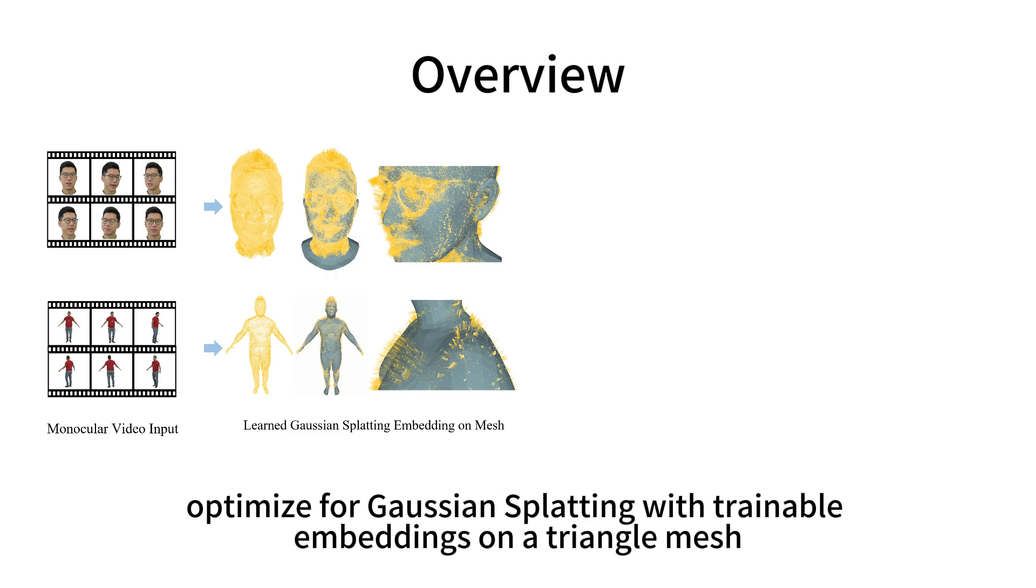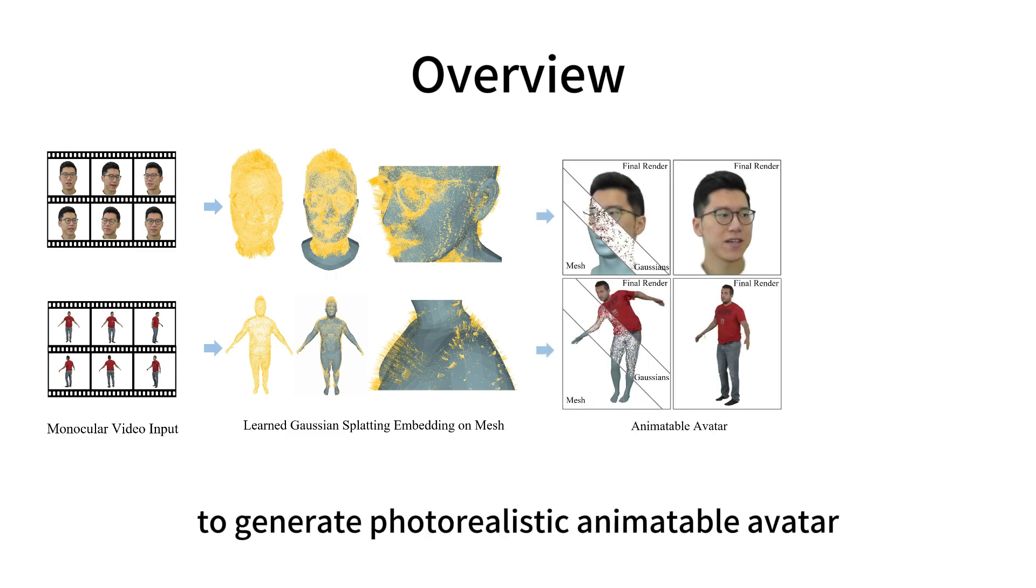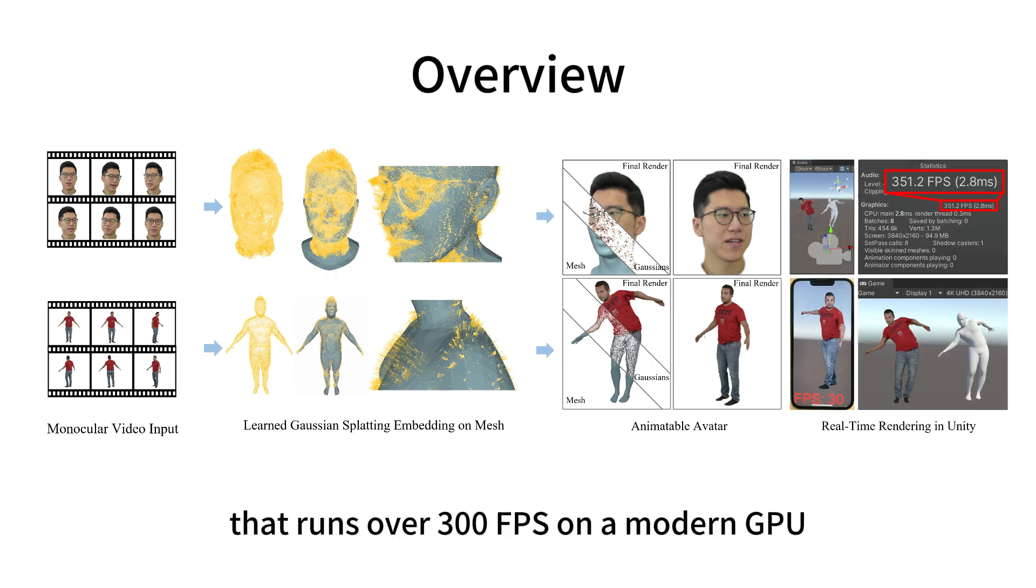We optimize Gaussian splatting with trainable embeddings on a triangle mesh to generate photorealistic animatable avatars that run over 300 FPS on a modern GPU.